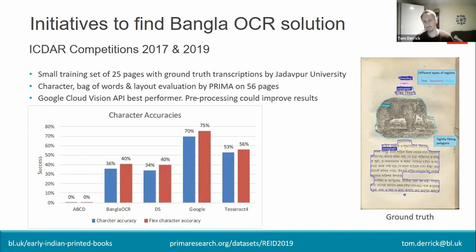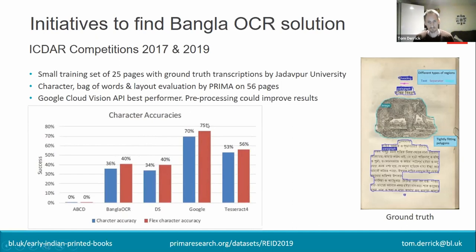You can see in the graph the results of the character accuracies. The red bars are a more accurate reflection of the character accuracy as opposed to the blue bars. Looking at the red bars, Google's Cloud Vision API was the best performer by some distance, with 75% character accuracy, which we thought was very impressive given it's working with a very small amount of ground truth training data, and that Google's synthetic training data might not necessarily reflect what we were giving it — historical Bengali text.